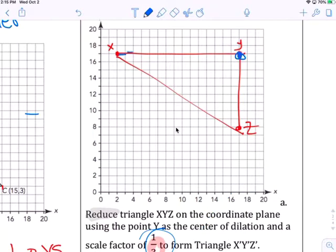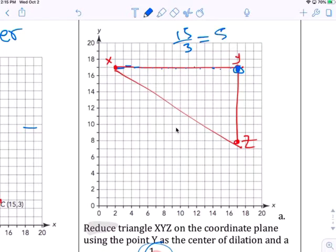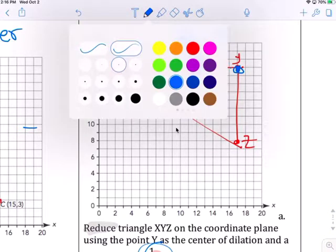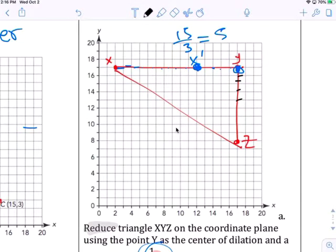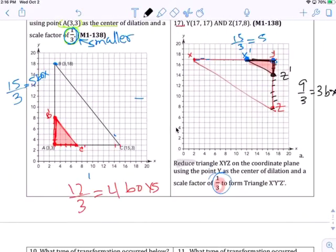So you count 1, 2, 3, 4, 5, 6, 7, 8, 10, 11, 12, 13, 14, 15. 15 divided by 3, get 5. X prime. And this is on this side, 1, 2, 3, 4, 5, 6, 7, 8, 9. 9 divided by 3, you only want 3 boxes. So 3 boxes is 1, 2, 3, right there. 5 on this side. This one is Z prime. Connect color. That's it, right there. It's reduced, it's a lot smaller than the original.